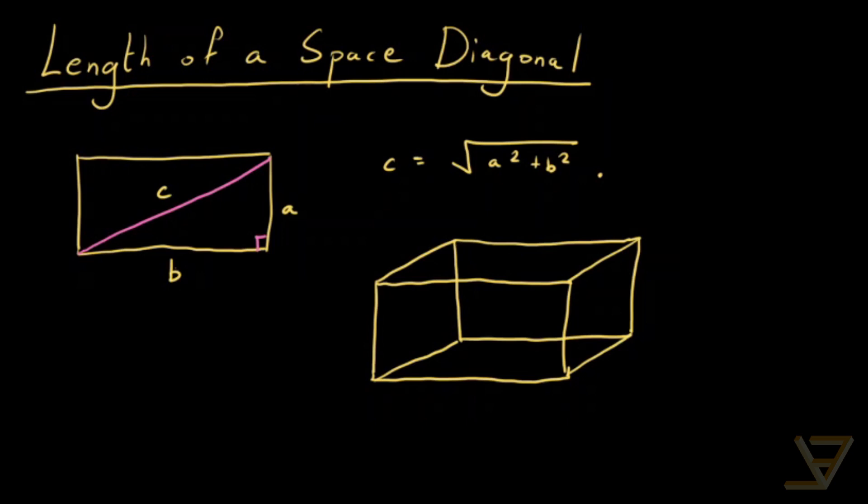And we want to find the length of a diagonal from one corner to the opposite corner, like this one.